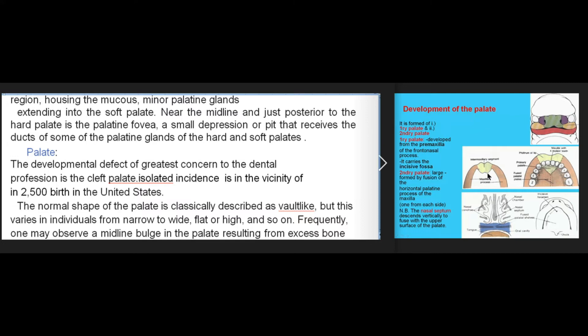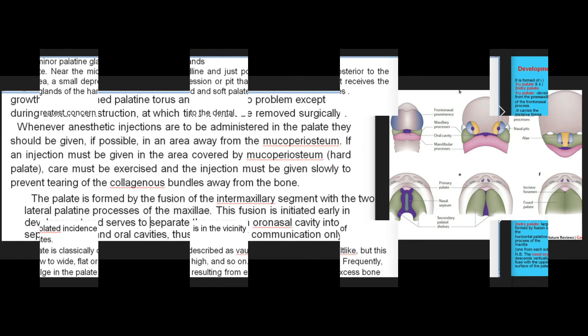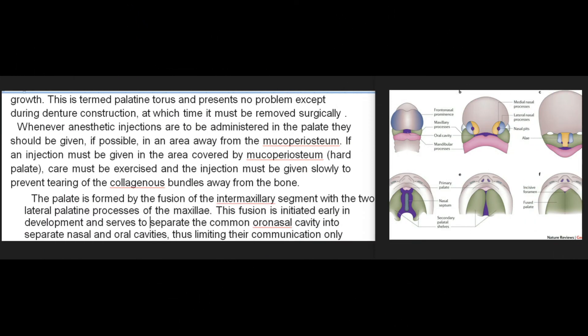The normal shape of the palate is classically described as vault-like, but this varies in individuals from narrow to wide, flat or high, and so on. Frequently one may observe a midline bulge in the palate resulting from excess bone growth; this is termed palatine torus and presents no problem except during denture construction, at which time it must be removed surgically.